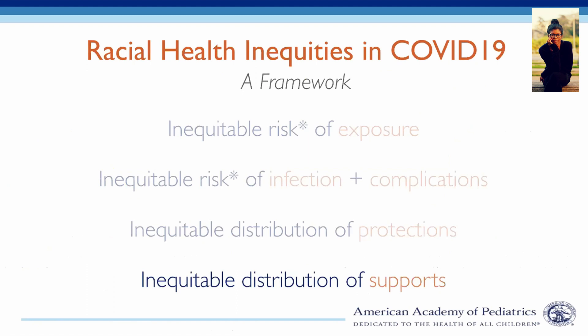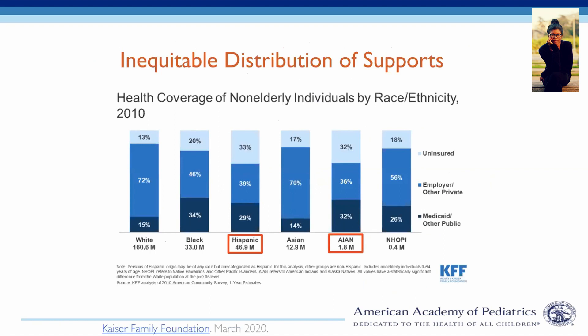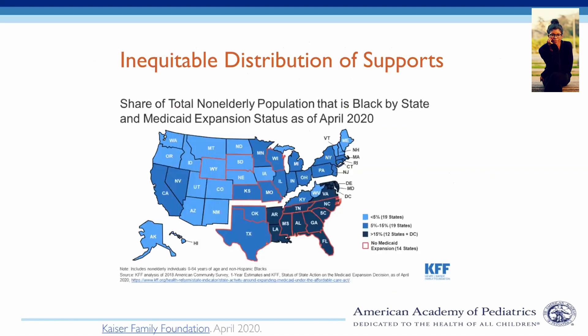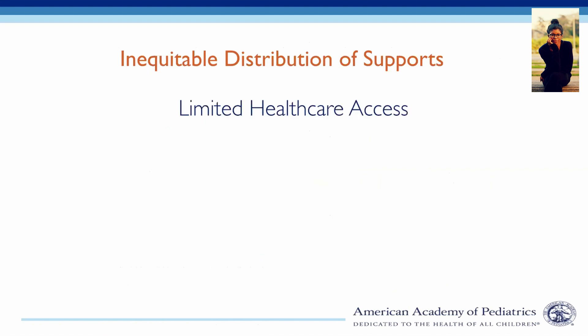Let's explore how supports to combat or buffer the effects of COVID-19 are inequitably distributed. First, Latinx and Indigenous populations have the lowest rates of insurance coverage. Second, African Americans predominantly live in states that failed to expand Medicaid. Together, these factors significantly limit access to healthcare services and increase the risk of untreated underlying illness. Despite increasing test capacity nationwide, the distribution of tests available to African American, Latinx, and Indigenous populations may be limited by provider discretion, patient insurance status, or local capacity, impeding efforts to contain spread.